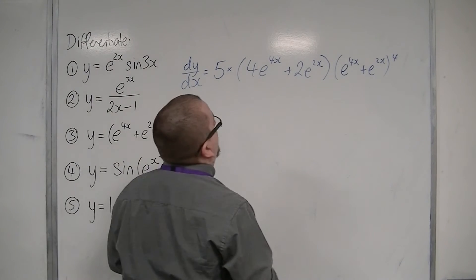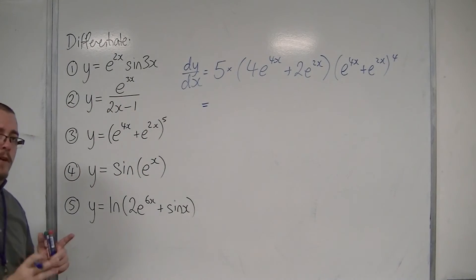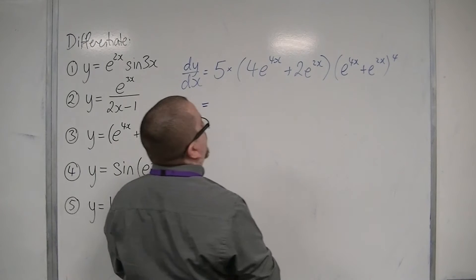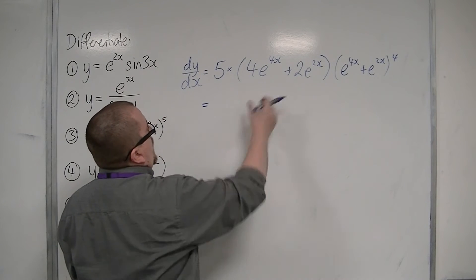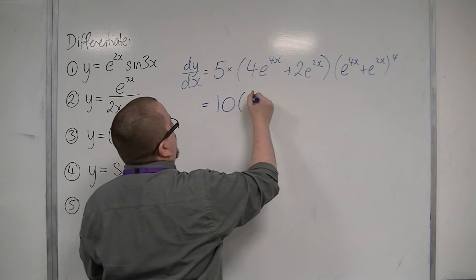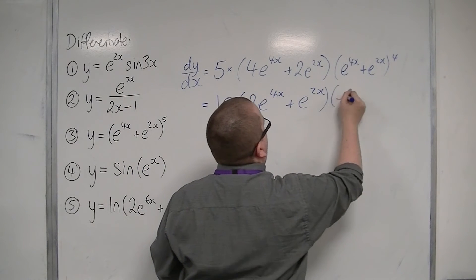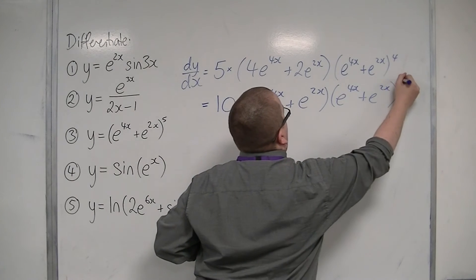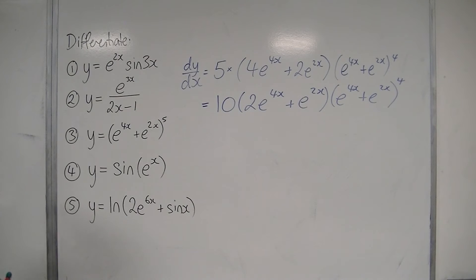To simplify, I'm going to pull out a factor of 2, giving 10 times (2e^(4x) plus e^(2x)) times (e^(4x) plus e^(2x)) to the power of 4. And that's how I'm going to leave number 3.